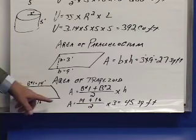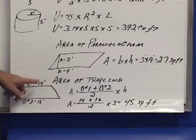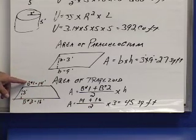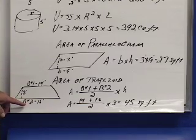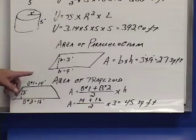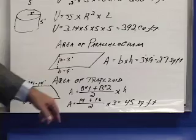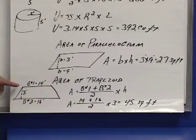The way we find that is we have to average the top and the bottom line. The top line, which we call base number one, is 14 feet. The bottom line, which we call base number two, is 16 feet. If we add those together, 14 plus 16, and divide it by two, the average of the top and the bottom line is 15 feet.